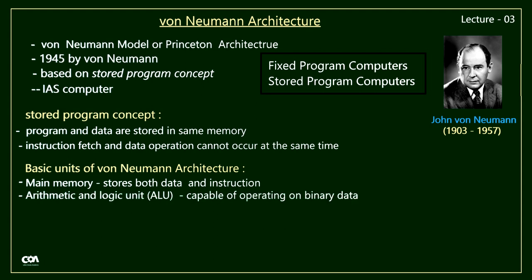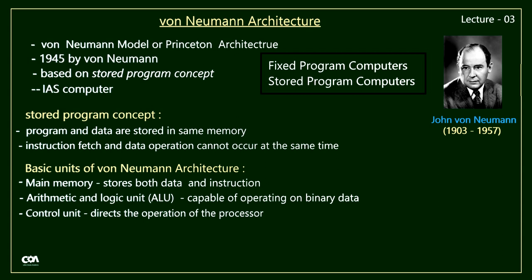Another component is the arithmetic and logic unit (ALU), which is a part of the CPU and is capable of operating on binary data — it can perform arithmetic and logical operations. The control unit is also a part of the CPU, and it directs the operation of the processor, telling the computer's memory, ALU, and input/output devices how to respond to instructions. Input/output devices are operated by the control unit; examples include keyboard, printers, and mouse.